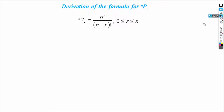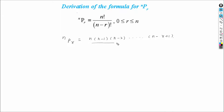NPR is equal to n into n minus 1 into n minus 2 into ... into n minus r plus 1. Now we need n minus r factorial in the denominator, so let us multiply the numerator and denominator by n minus r factorial.